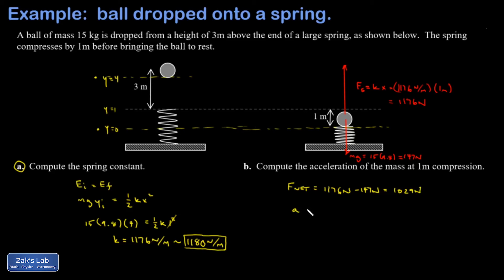And then I know the acceleration of the mass will be the net force divided by the mass, so that's 1029 newtons divided by 15 kilograms, which gives me 68.6 meters per second squared.